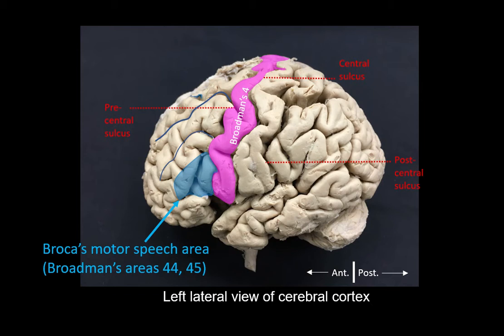Let's start by orientating the pro section. What we can see over here is basically a left lateral view of the cerebral cortex. We can see the frontal lobe in the front and the cerebellum and the occipital lobes at the back. We have an important sulcus on the supralateral surface — this is the central sulcus, which separates the motor frontal lobe in the front from the parietal sensory lobe at the back.